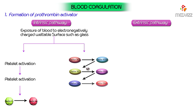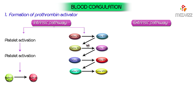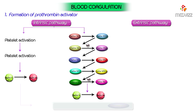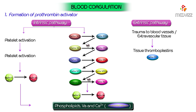In the presence of calcium, activated factor 11a activates factor 9 to factor 9a, which in turn activates factor 8 to factor 8a, leading to activation of factor 10 to factor 10a in the presence of calcium. This factor 10a leads to activation of factor 5 to factor 5a. Phospholipids, activated factor 5, and calcium form the prothrombin activator.